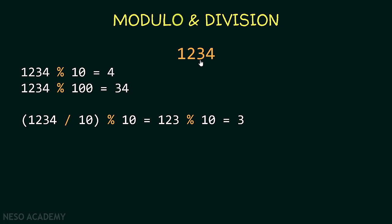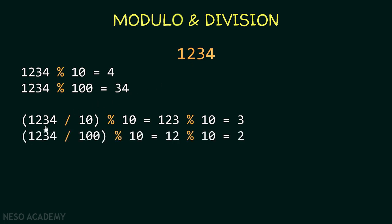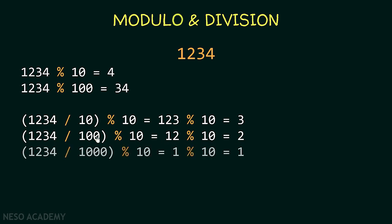By applying the same logic we get the remaining digits. 1234 divided by 100 gives us 12, and 12 modulo 10 gives us 2. Finally, 1234 divided by 1000 gives us 1, and 1 modulo 10 gives us 1. So now let's solve this exercise inside IntelliJ.